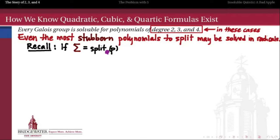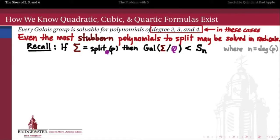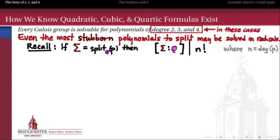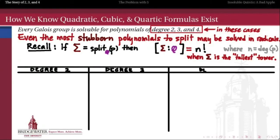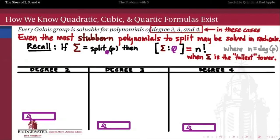If we have the splitting field of a polynomial over the rationals — call it sigma — then the Galois group of sigma over Q will always be isomorphic to a subgroup of S_n, the symmetric group on n symbols, where n is the degree of that polynomial. Using Lagrange's theorem, the Galois group has a number of elements which is a divisor of the order of S_n, and since a splitting field is always a normal extension, the degree of this extension divides n factorial. The most stubborn polynomials realize the upper bound: a splitting field of degree n factorial over Q.